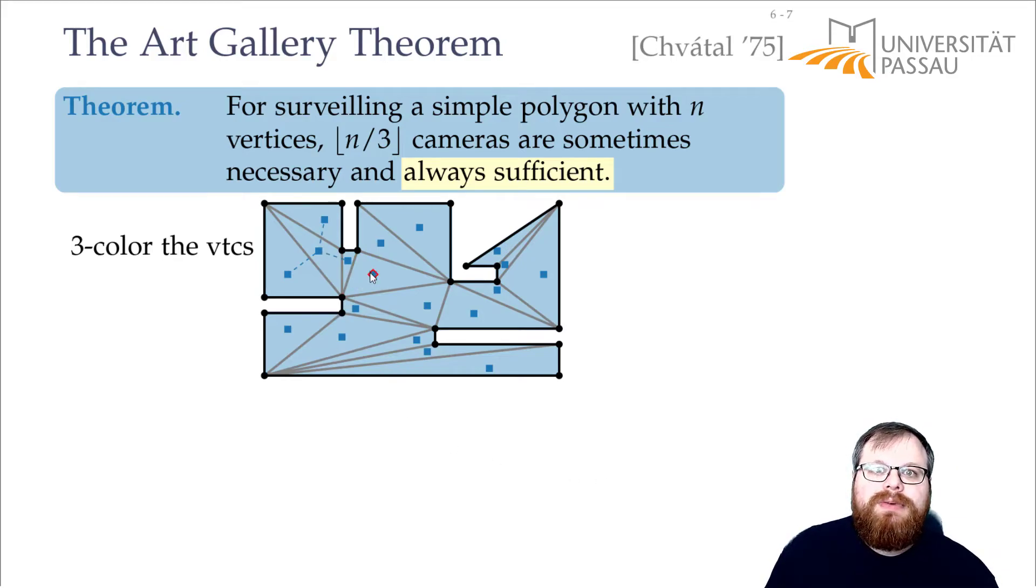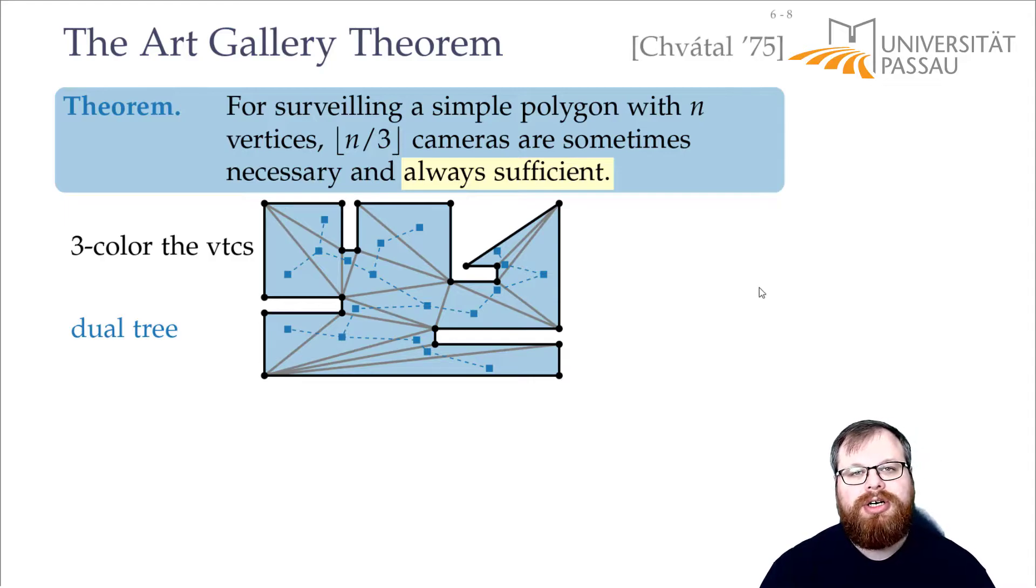And that way, each of these vertices is connected to at most three other vertices, because the triangle it lies in has three boundaries. But some of them are only connected to one or two because the boundary of the triangle is also a boundary of the polygon. It is easy to show that this is a tree.